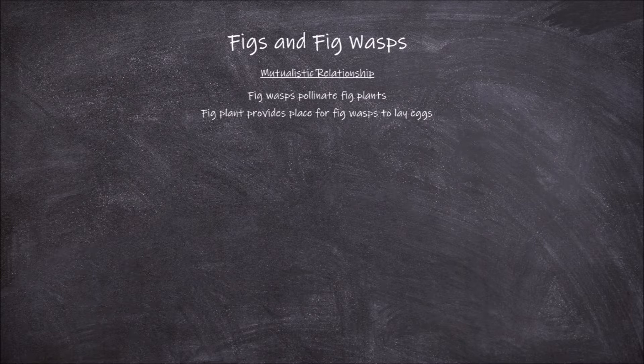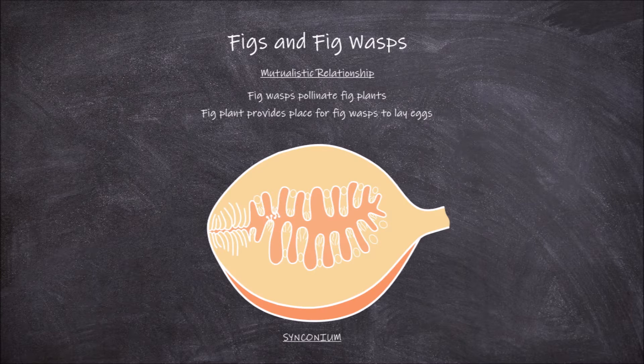The fruit of figs are called synconia, or singular synconium. The synconium is actually an inflorescence made up of many flowers.